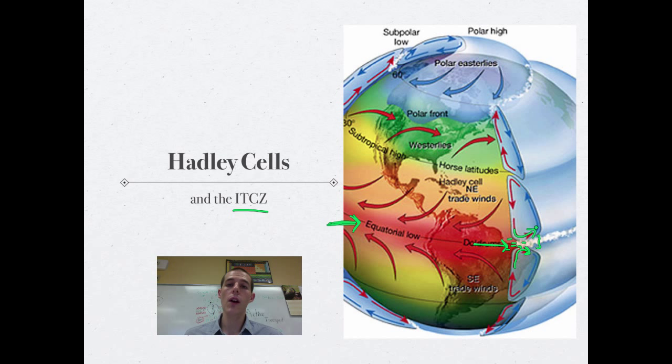That air that has just dropped all of its water starts to flow north and south. As it flies north and south, it starts to cool down and sink towards the surface of the earth. As it sinks towards the surface, the pressure on it increases, which means it goes through adiabatic heating and it warms up. Then it rushes across the surface of the earth at about 30 degrees. Those areas at 30 degrees where that warm, dry air comes back down is where the deserts of the world exist.